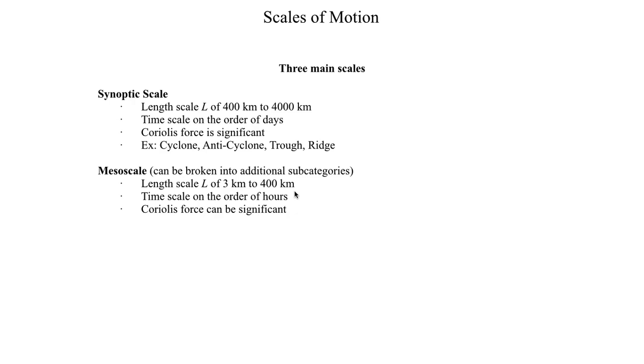For something like a supercell, that's a bit too small to be impacted by the Coriolis force in a significant way, even though it is a mesoscale phenomenon. In the mesoscale, Coriolis force can be significant—it's sort of the overlap between being insignificant and being significant. Examples include squall lines, derechos, mesoscale convective vortexes, and mesoscale convective systems. The plains has seen a lot of MCSs in recent days as of me recording this video.